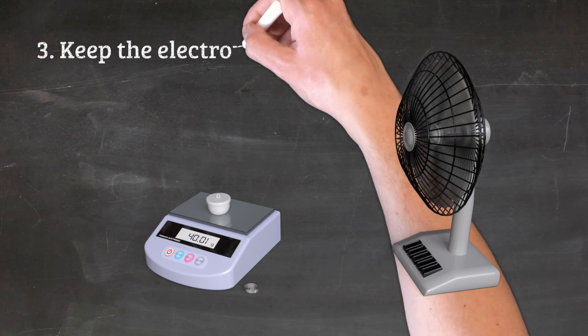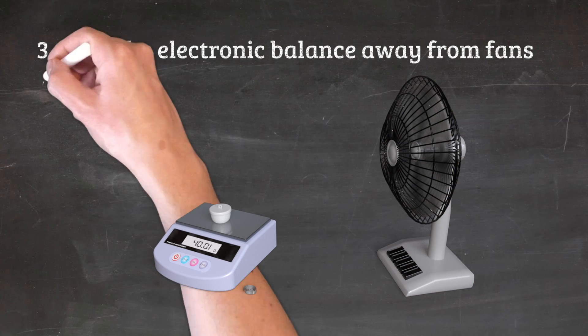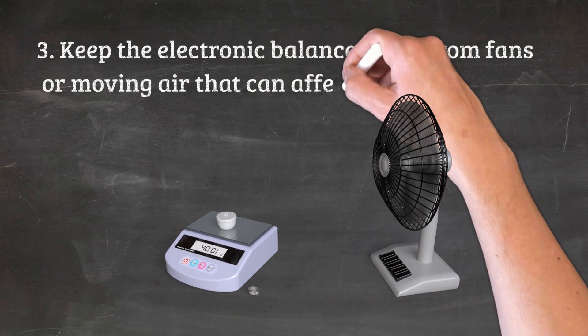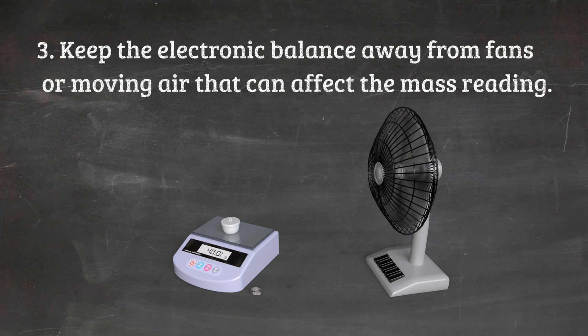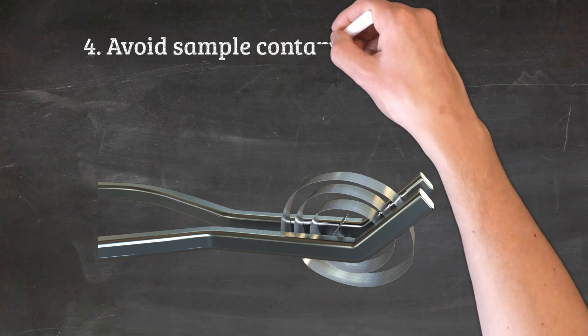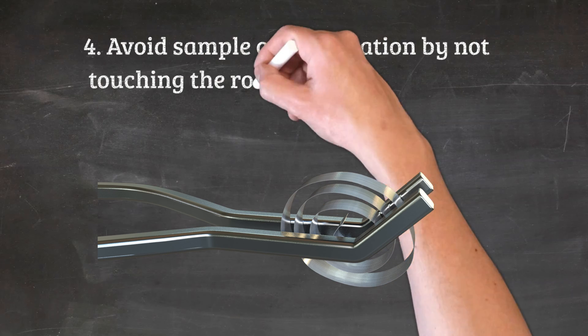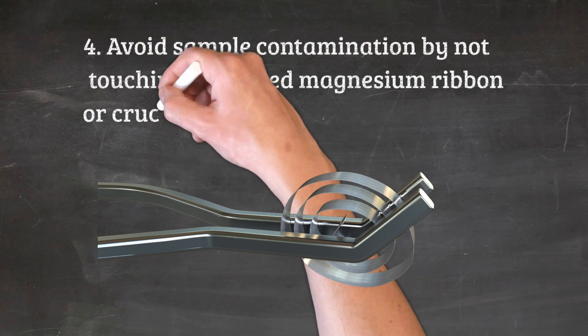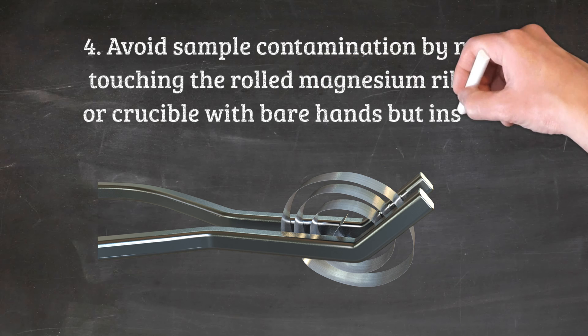3. Keep the electronic balance away from fans or moving air that can affect the mass reading. 4. Avoid sample contamination by not touching the rolled magnesium ribbon or the crucible with bare hands but instead use tongs.